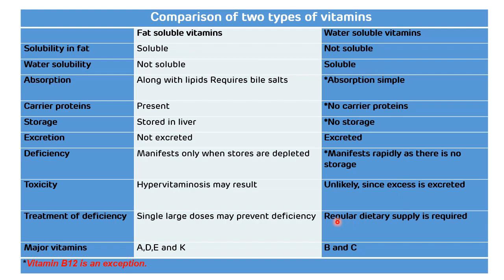Major examples of fat-soluble vitamins are vitamins A, D, E, and K, while water-soluble vitamins include the vitamin B complex and vitamin C. These are the various differences between fat-soluble and water-soluble vitamins.